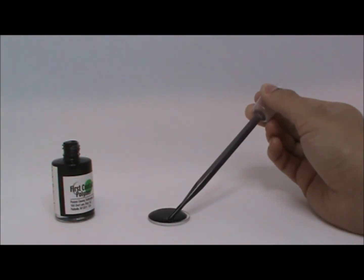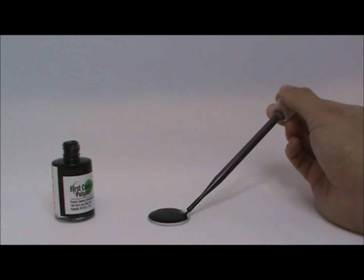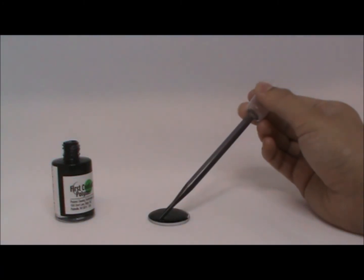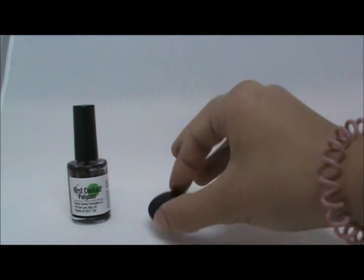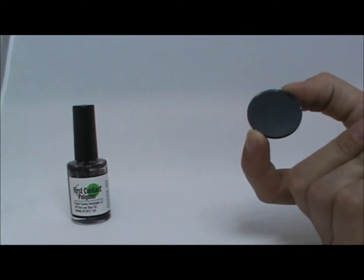We developed and tested several variations of polymers with additives to hide such reflections until we were satisfied. Black first contact polymer is the result of these efforts.